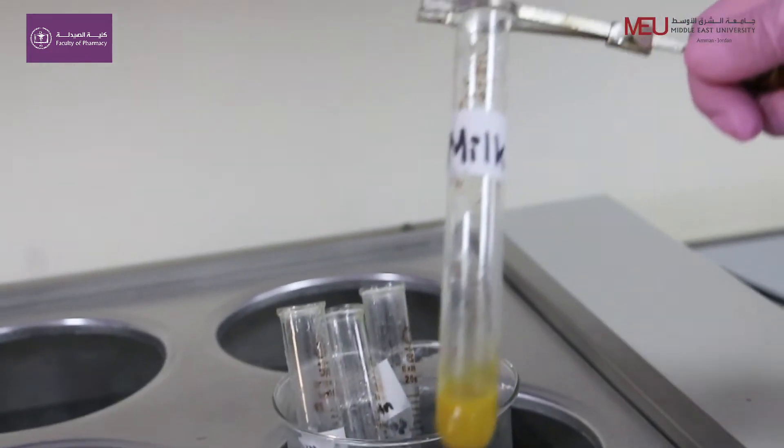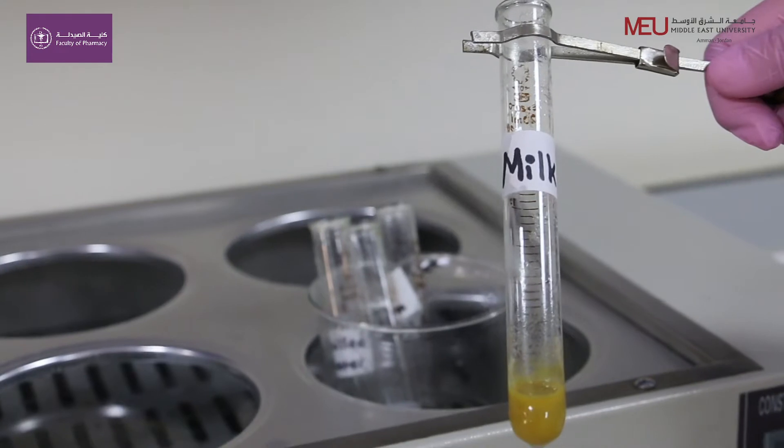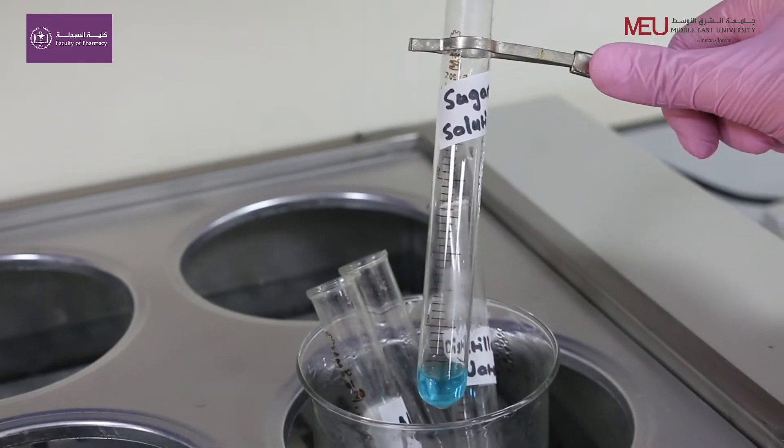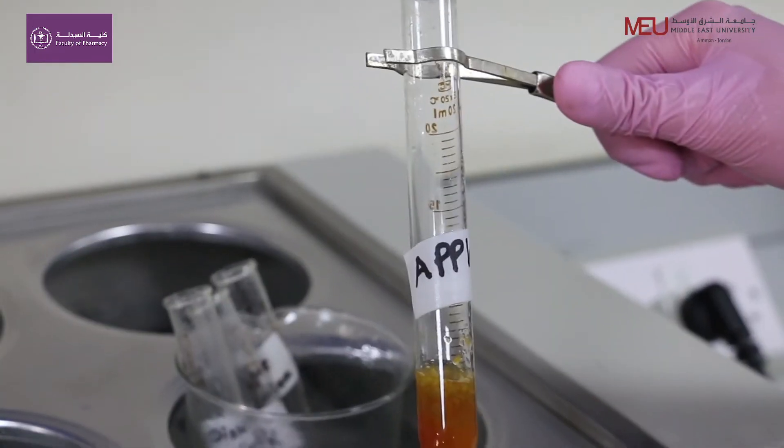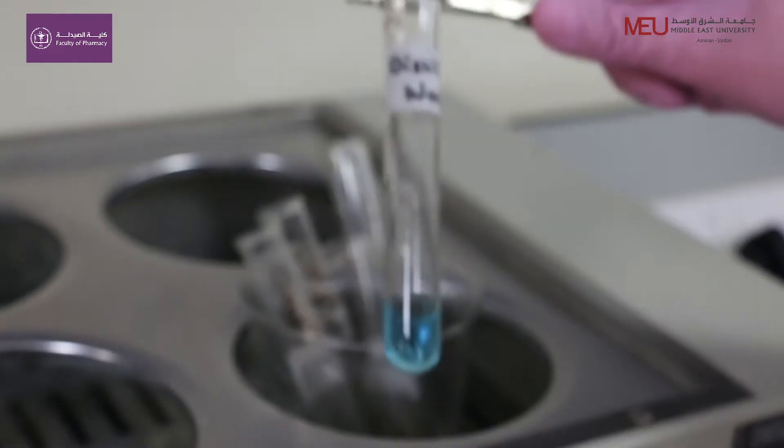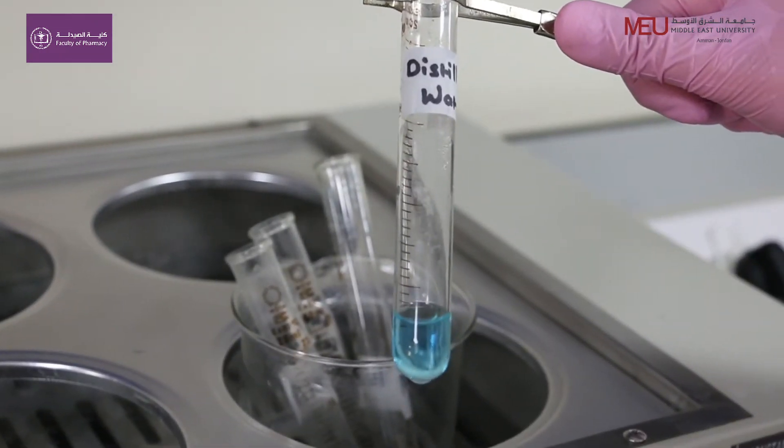The Benedict test identifies reducing sugars based on their ability to turn the blue copper ions in Benedict's solution to a yellowish-red color.